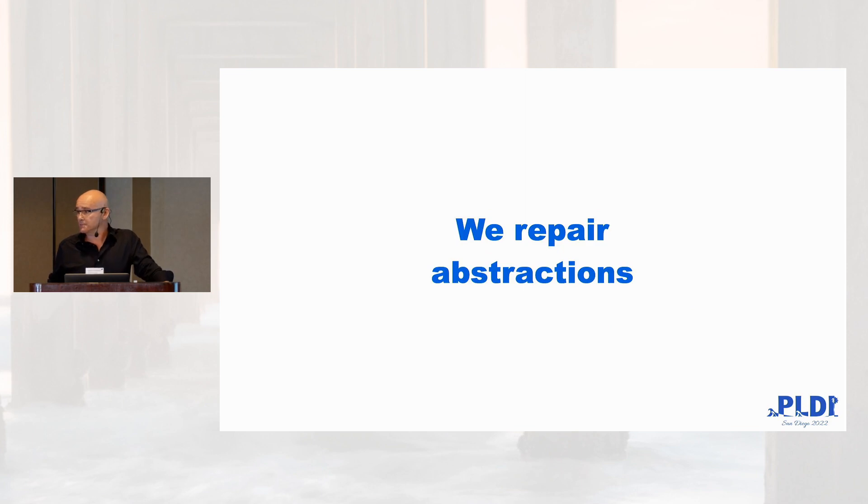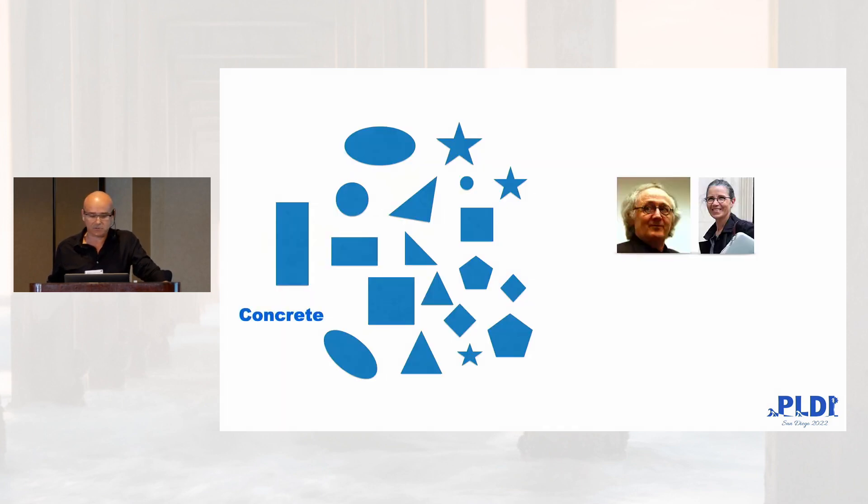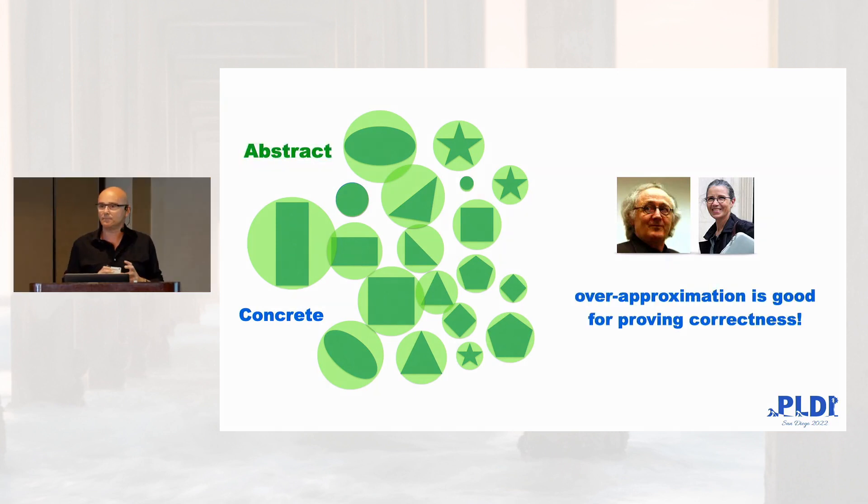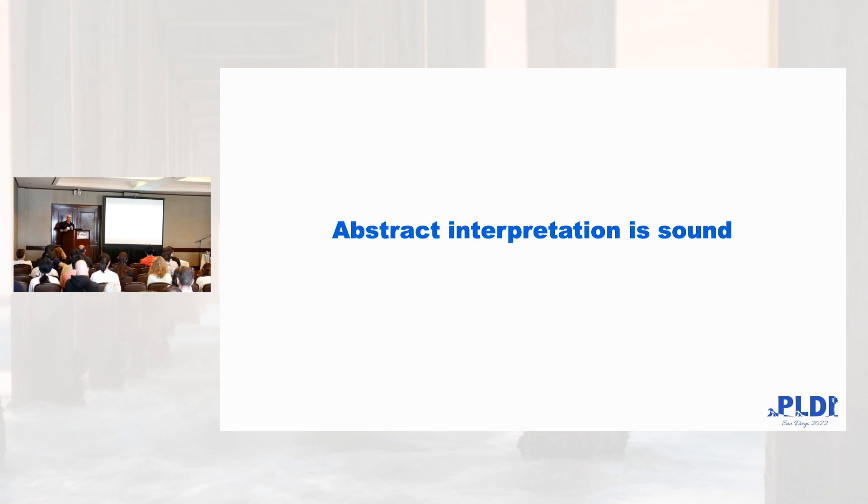So we repair abstractions. Quickly, what is an abstraction? Imagine that you have many properties, like those shapes. Deciding an abstract domain means you choose some of these shapes, in that case, the circle. And instead of computing around those shapes that have different forms, you compute on the abstract. And you try to extract properties about the concrete. And this is pretty good because you can prove correctness of your problems.